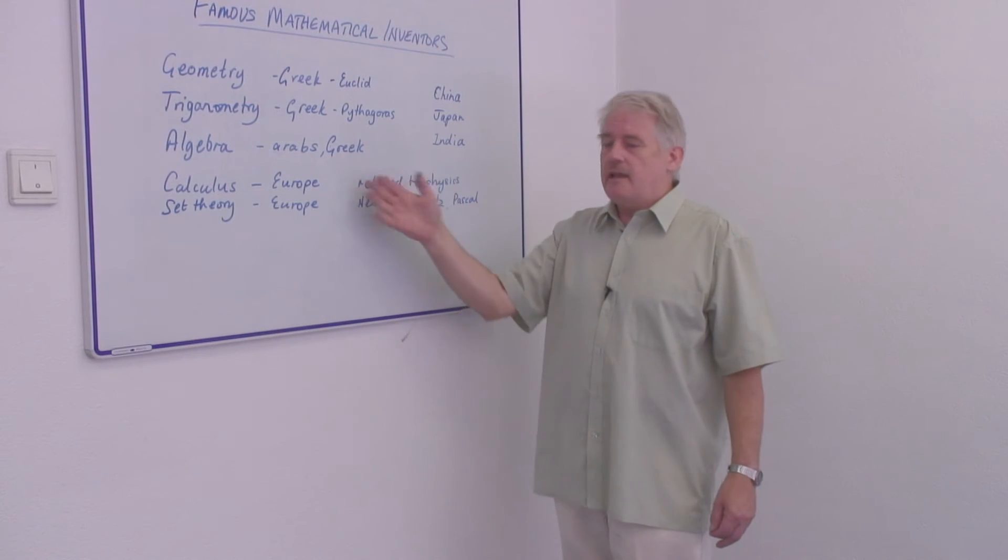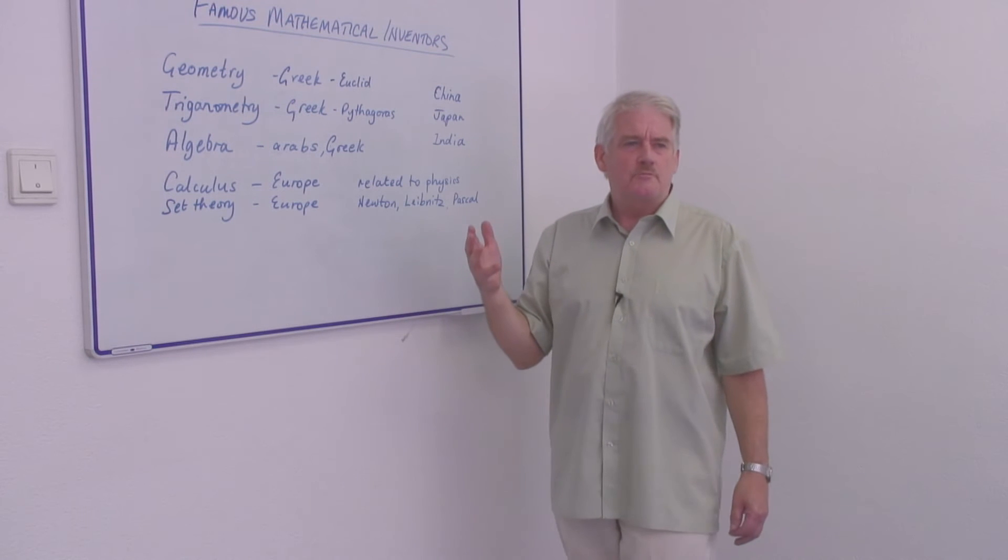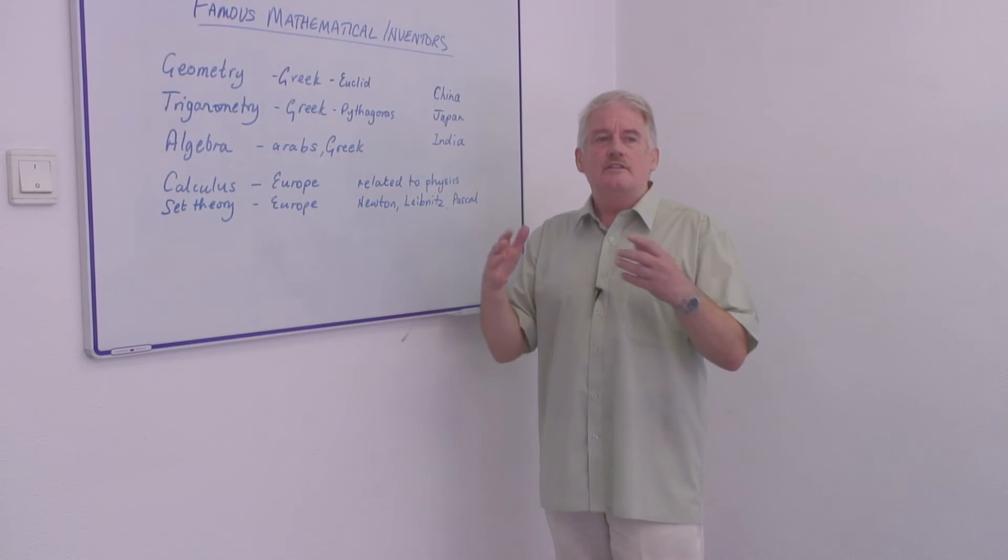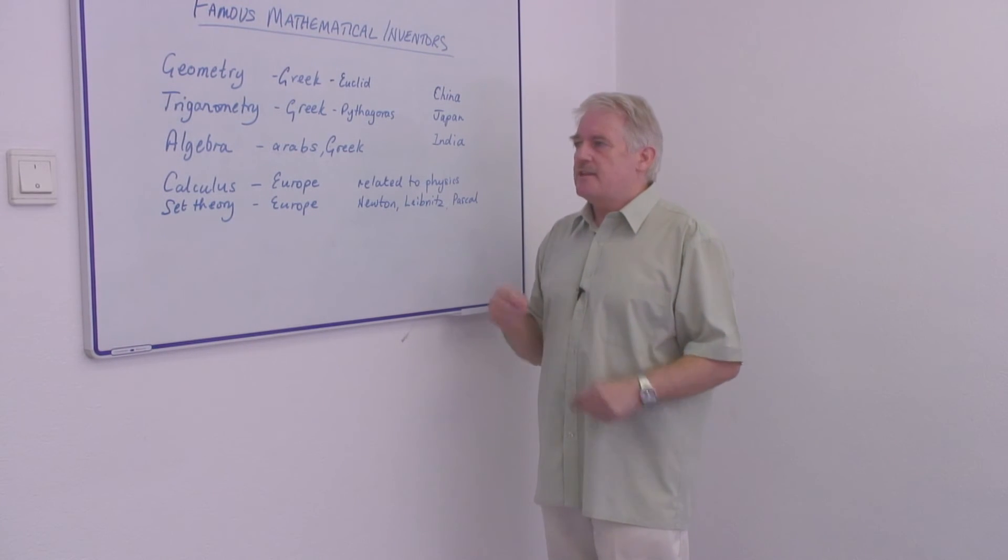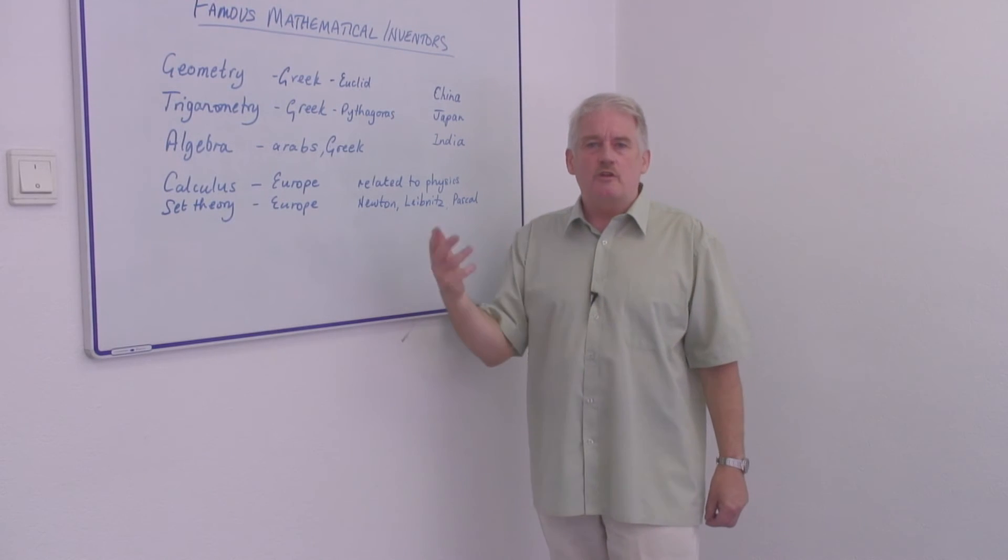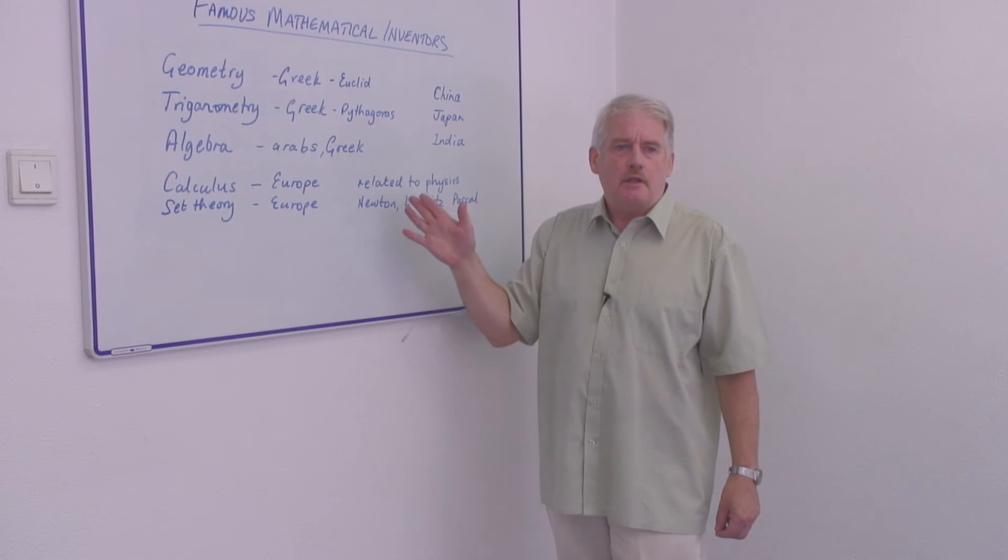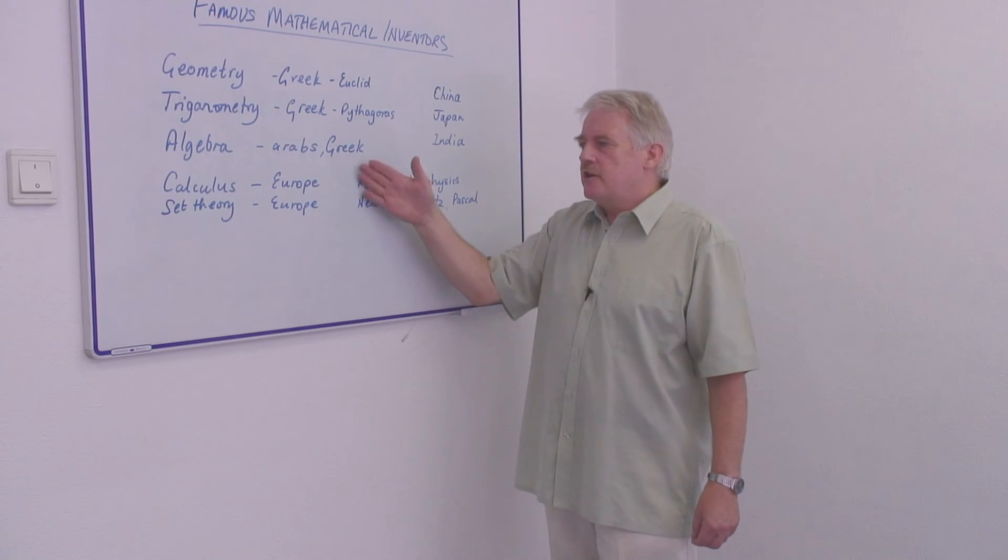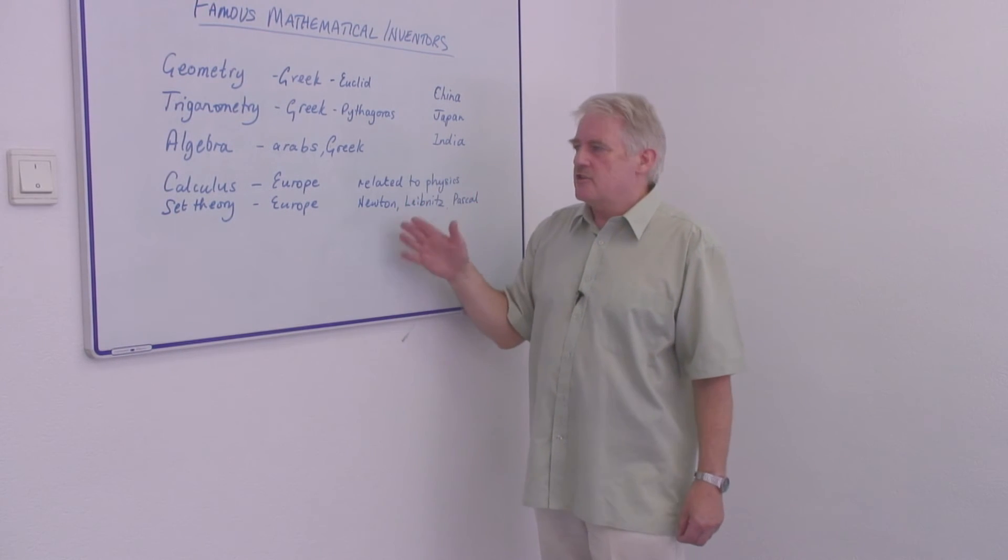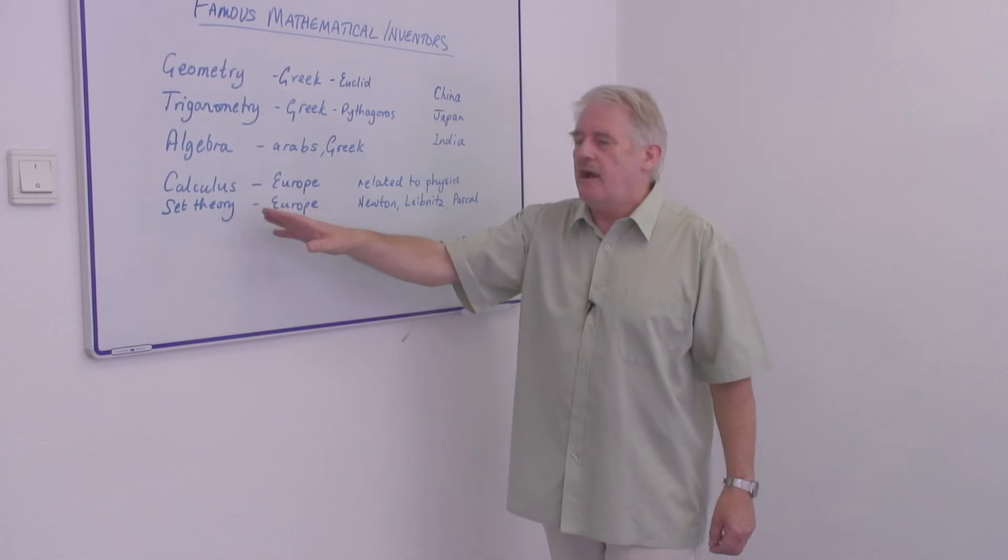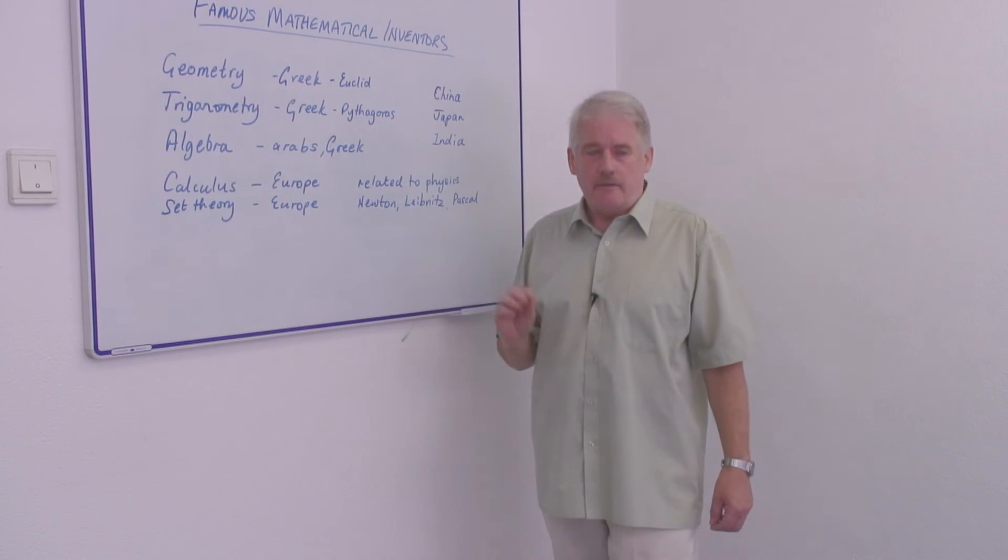These enabled people to solve problems where everything continually developed. Instead of there being fixed quantities, things developed very rapidly or changed very rapidly. And as one thing changes, another number changes. And therefore, we have to develop our calculus theories.